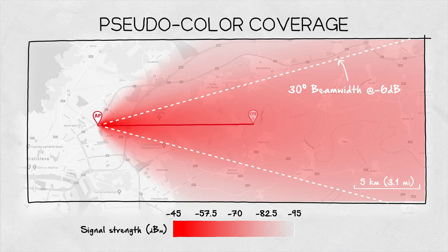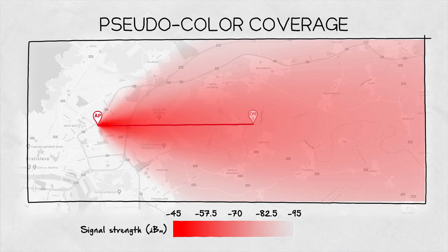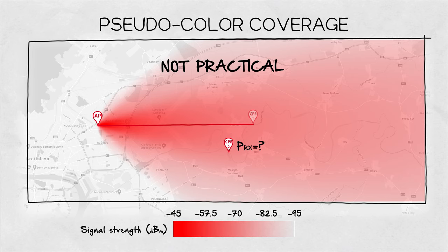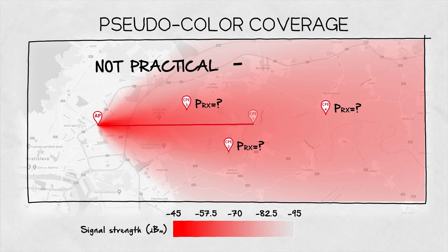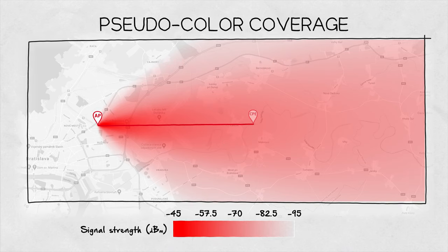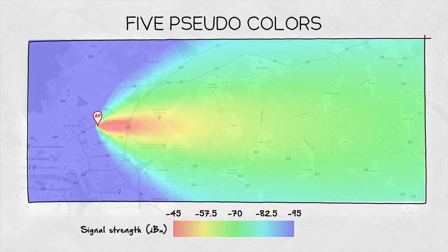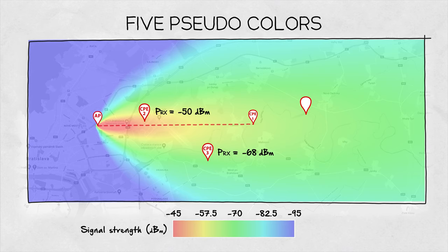While this visualization is the closest thing to reality, it is not practical. With no clear coverage edges and increasing transparency of one color, it is hard to read precise values of the signal strength directly from the image. We can improve this by using multiple colors. This is the same image but using five colors — now it is way easier to quickly estimate the RSSI level at any point.